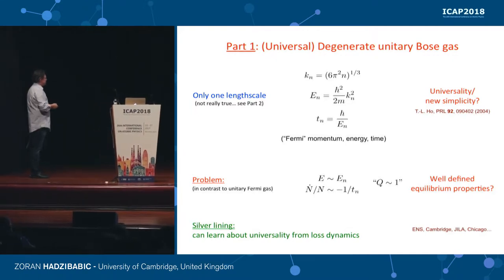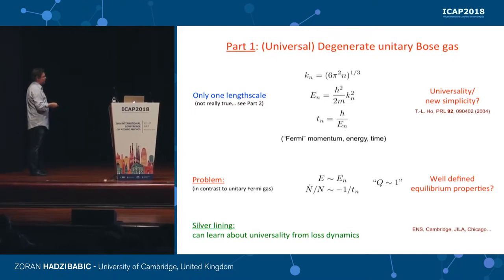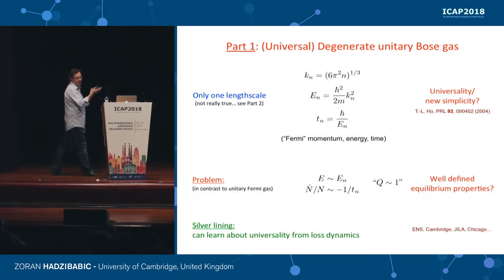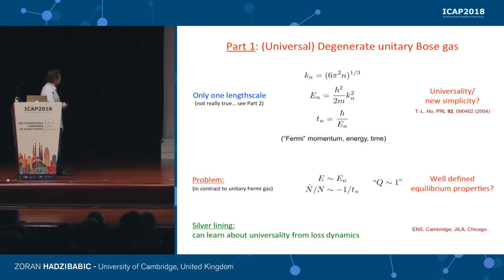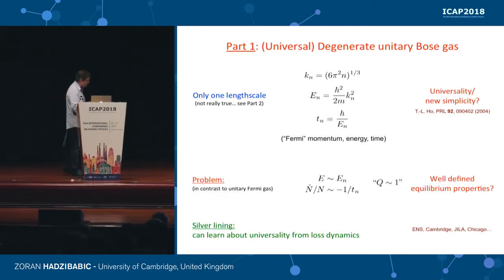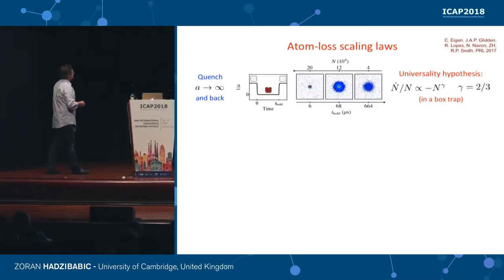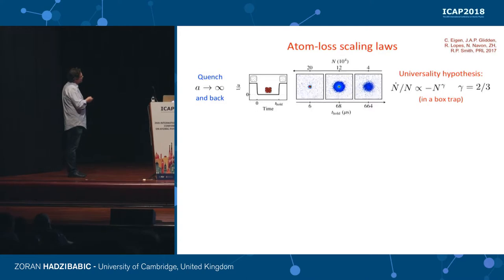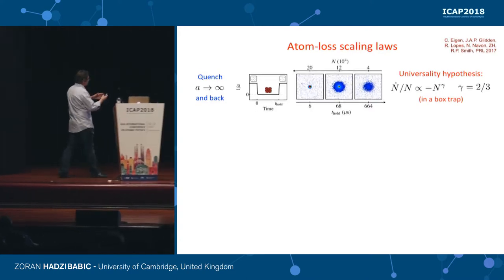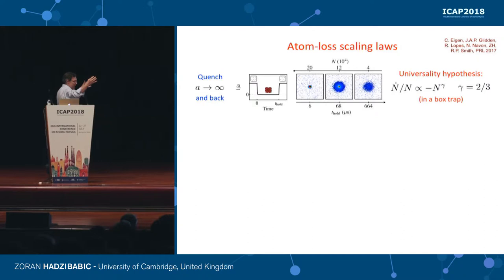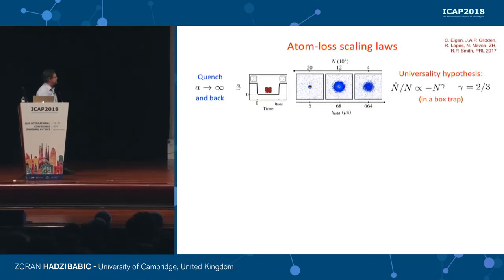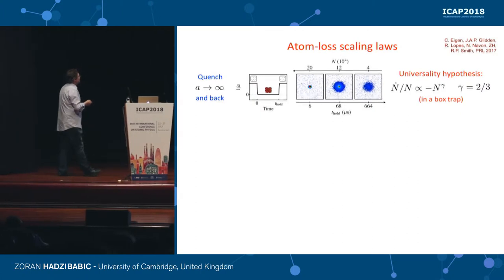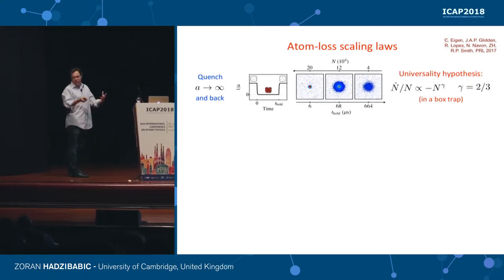There is a silver lining: if the losses show signs of universal physics, then you can just study losses, and those are comparatively simple experiments to perform and analyze. This is the basic experiment: you start with a weakly interacting gas in a box, then suddenly quench A to infinity. In this cartoon, the particles swell up to their interparticle distance, which limits the interaction strength. Then you wait a little, turn off interactions, and do a measurement to see what's left.